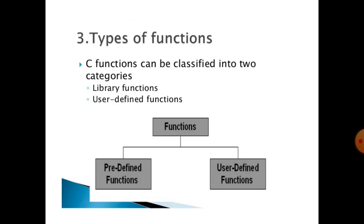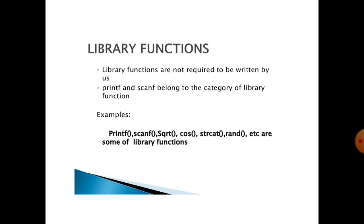C functions can be classified into two categories: library functions and user-defined functions. Firstly, we will see library functions. Library functions are not required to be written by the user. They are also called built-in functions. Printf and scanf belong to the category of library functions. For example, printf, scanf, sqrt, cos, strcat, rand, etc. are some library functions.